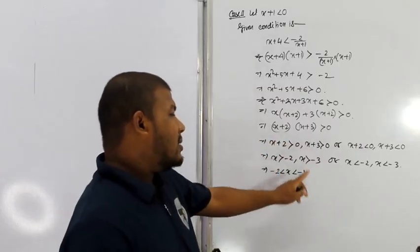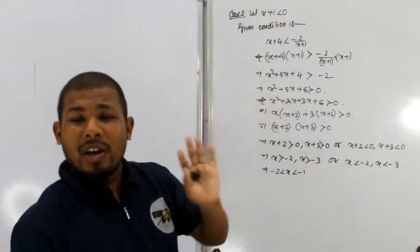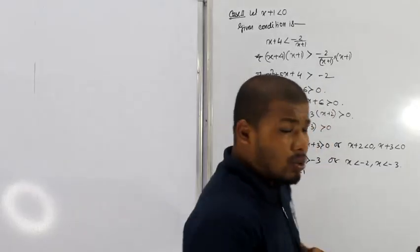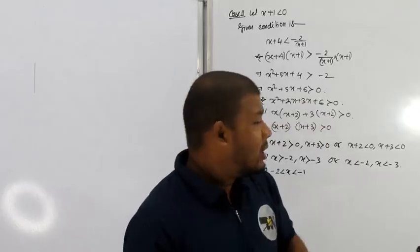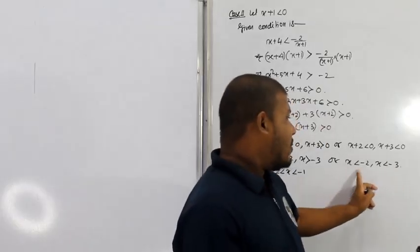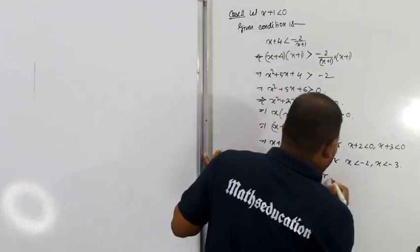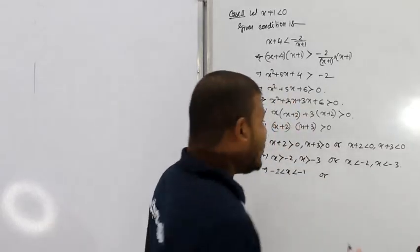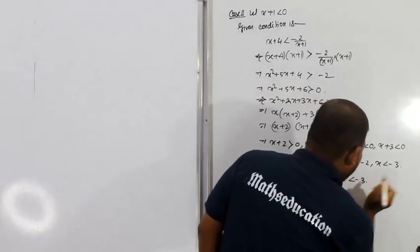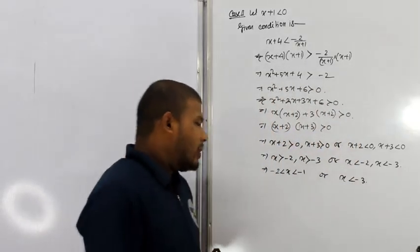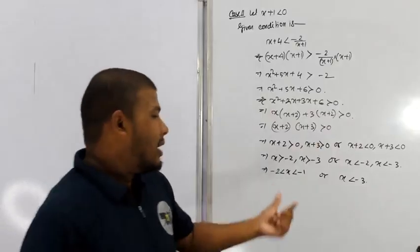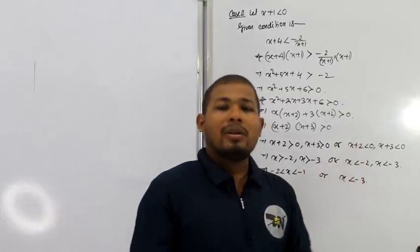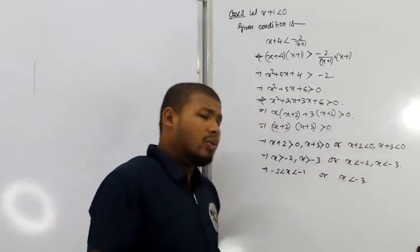So the final solution is: minus 2 is less than x is less than minus 1, and also x is less than minus 3. Therefore the complete solution set is x less than minus 3 or minus 2 less than x less than minus 1. This is the best solution combining all conditions.